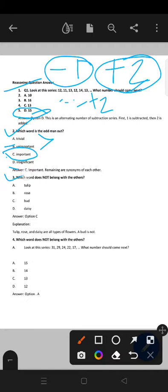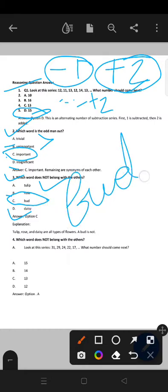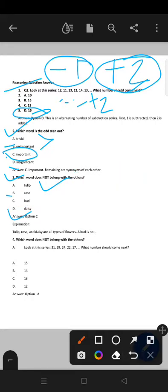Now, which word does not belong with others? Tulip, rose, bud, daisy. So tulip is a flower, rose is a flower, daisy is a flower. But look at the C option. Bud is written here. So bud means, I think you know very well, bud means Kali. So option C is correct option. Bud is not a flower.